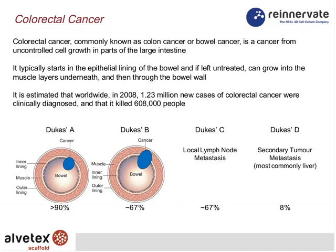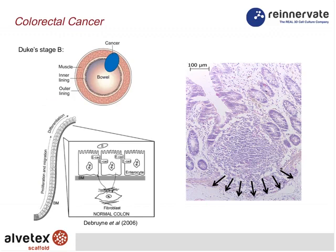Colon cancers can be graded by the Duke stage grading scale — stages A, B, C, D — with decreasing survival rates as the disease progresses. Initially polyps form on the surface of the epithelial lining; at Duke stage B cells begin to invade the wall of the colon; Duke stage C and D involve metastasis and secondary metastasis. We are particularly interested in Duke stage B, where invasion of surrounding tissues begins.